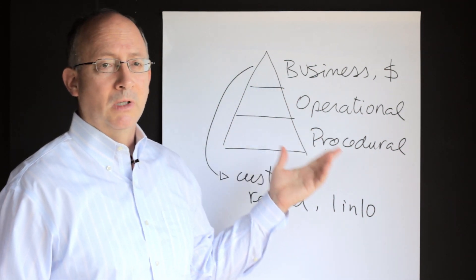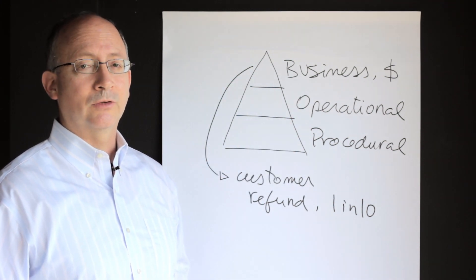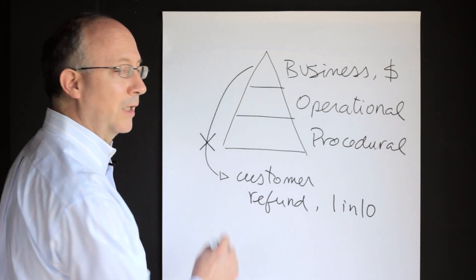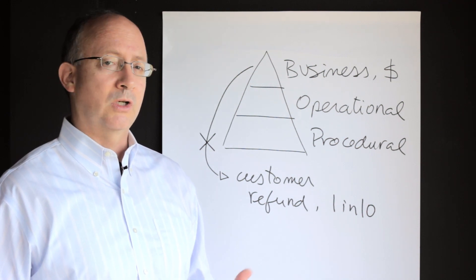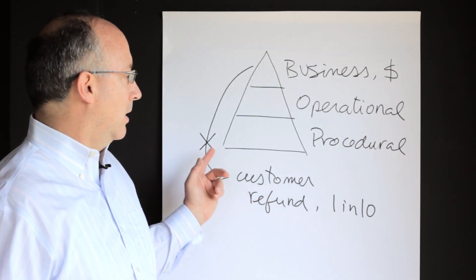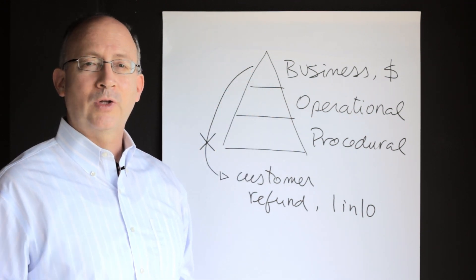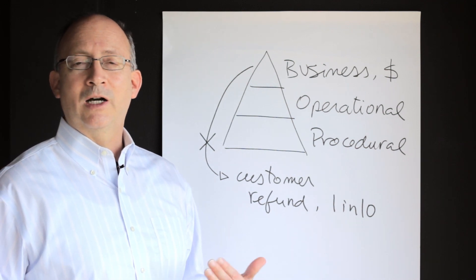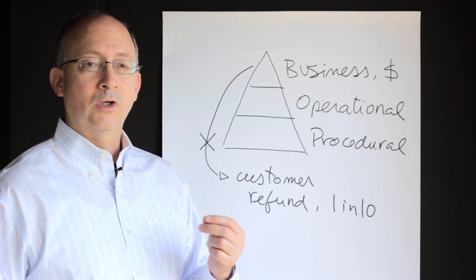How could this problem be solved rapidly? This is a business or financial type problem, and it could be solved with a business or financial type of answer. For instance, an easy thing would be to change the refund policy so that refunds become very hard to obtain — you can change the policies or flat out deny these refunds. That is a financial solution to a financial problem. The question, however, is how sustainable is that solution? Clearly not very sustainable.